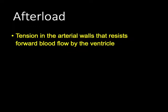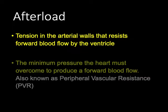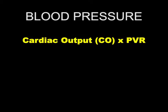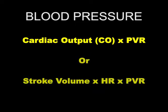Afterload is the tension in the arterial walls that resists forward blood flow by the ventricles — something we consider when assessing high blood pressure. It also represents the minimum pressure the heart must overcome, the minimum work required to move blood forward, also called peripheral vascular resistance. Cardiac output times resistance equals blood pressure, and since cardiac output is stroke volume times heart rate, the three key factors are stroke volume, heart rate, and resistance.